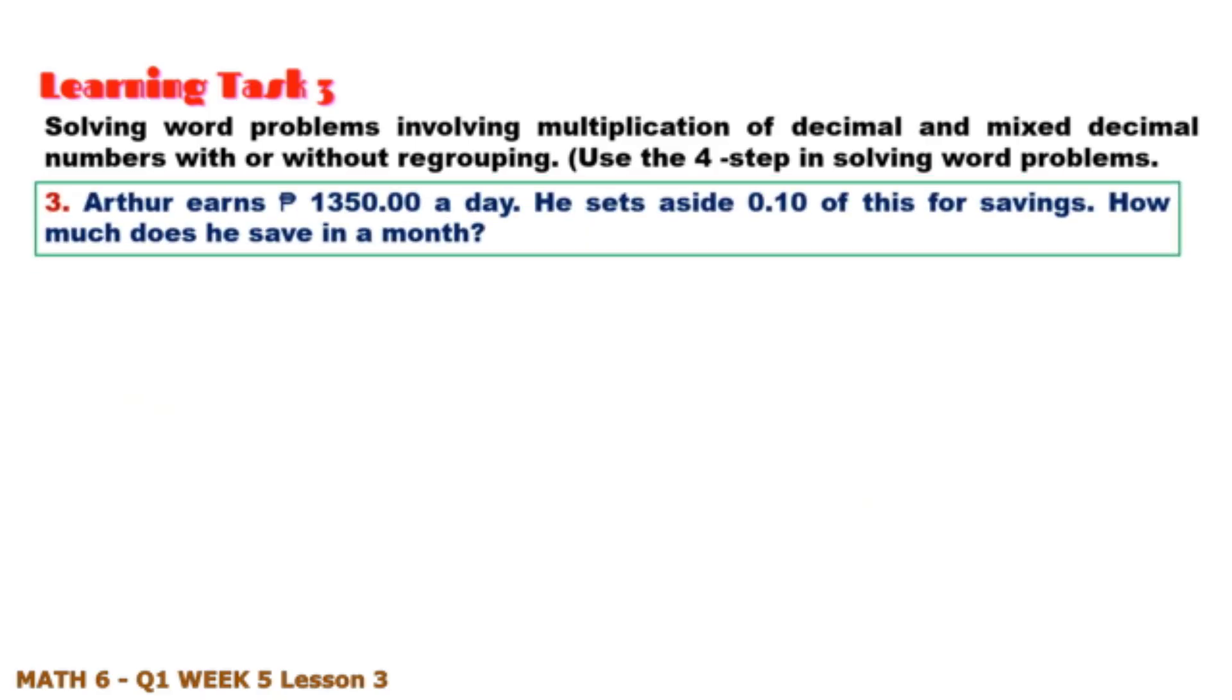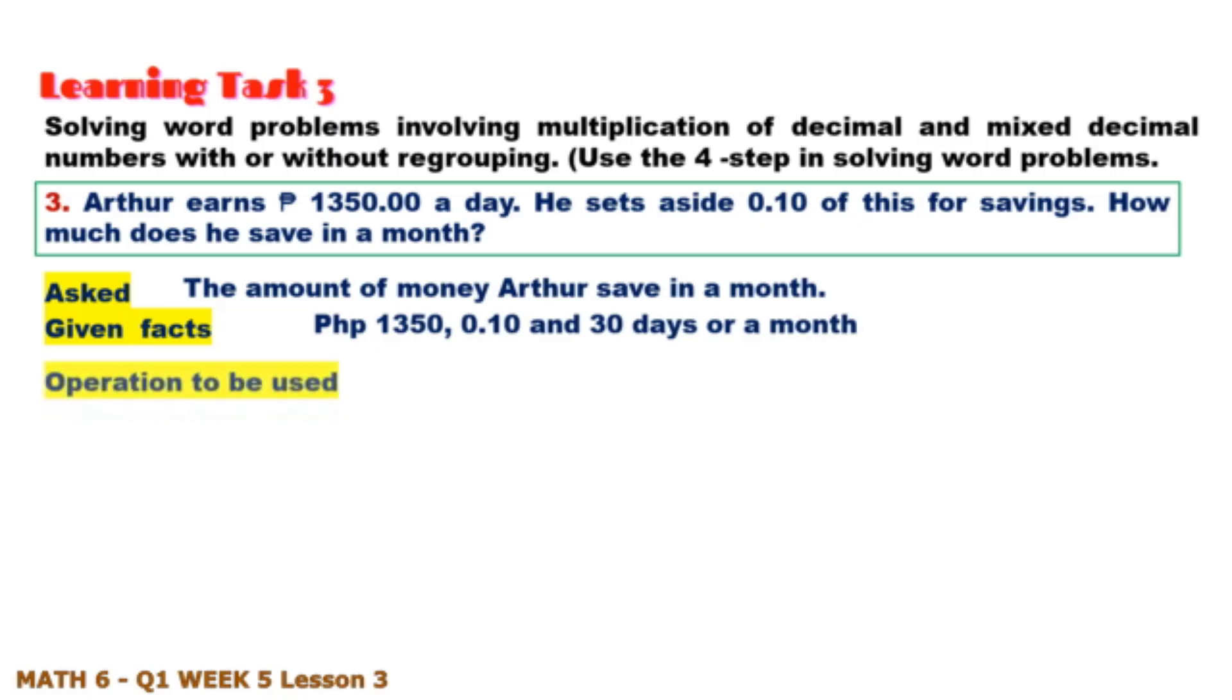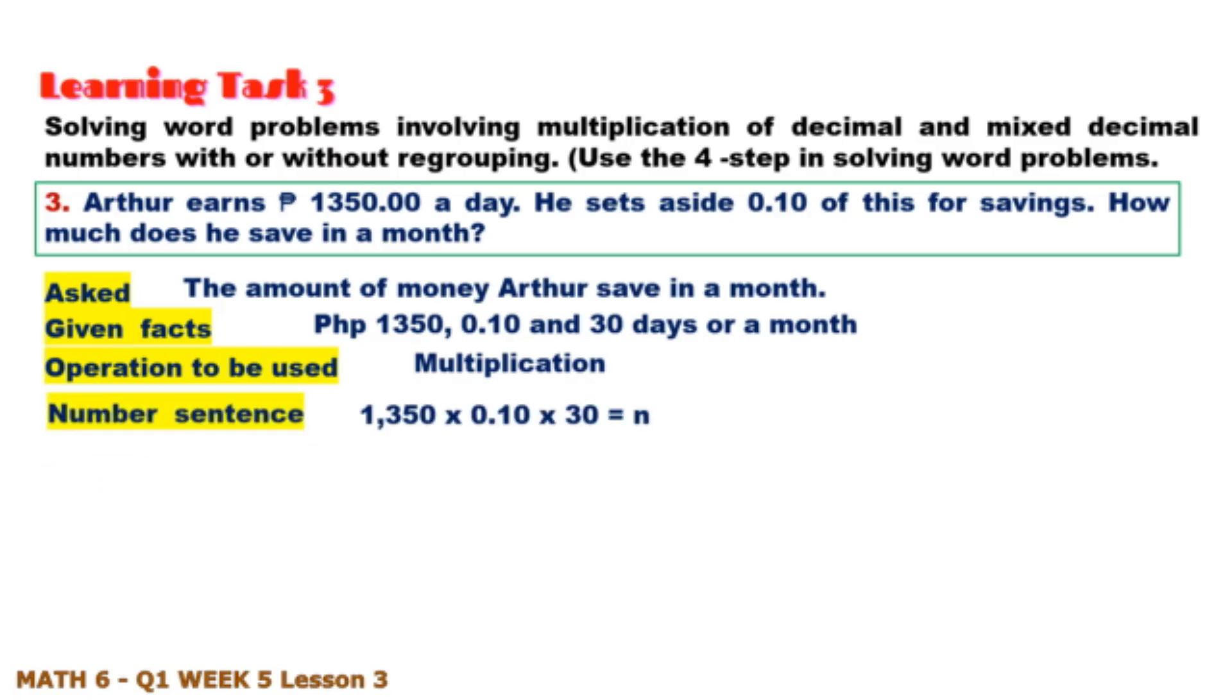Number three: Arthur earns 1,350 pesos a day. He sets aside 0.10 or 10 percent of this for savings. How much does he save in a month? What is asked? Given facts? Operation to be used? Number sentence? And for solution, just multiply. The answer is 4,050 pesos.